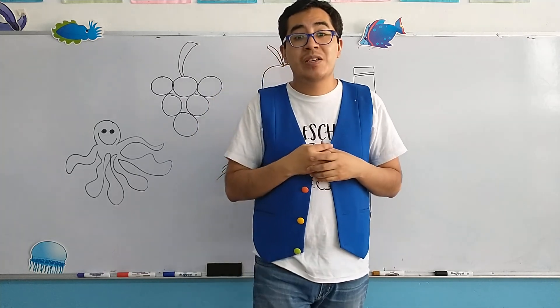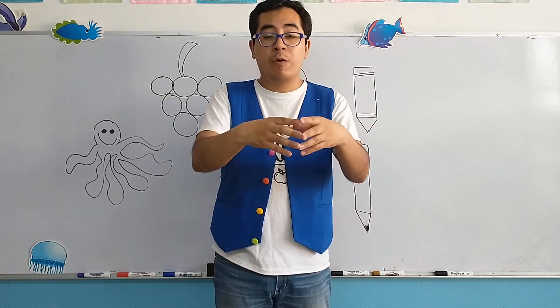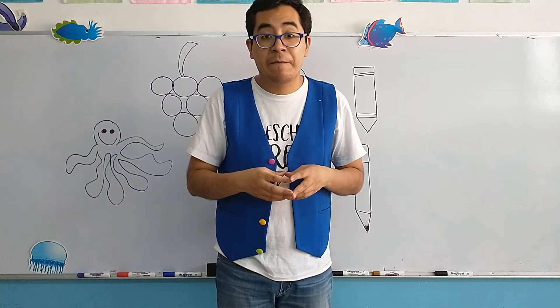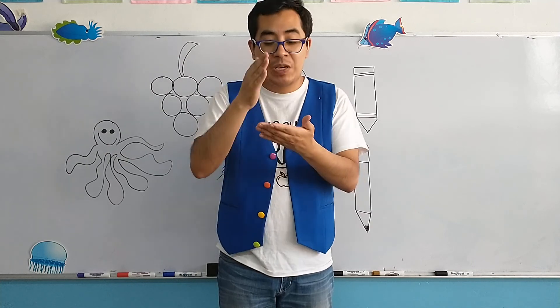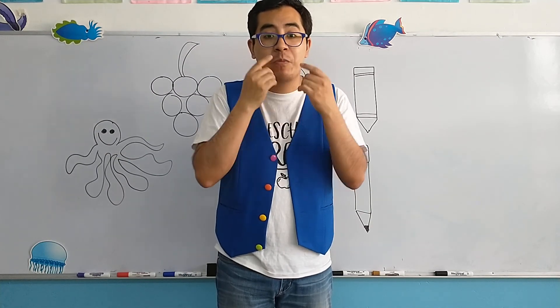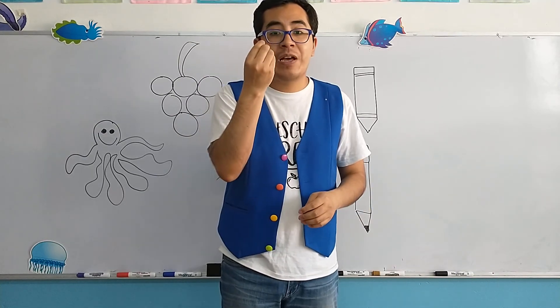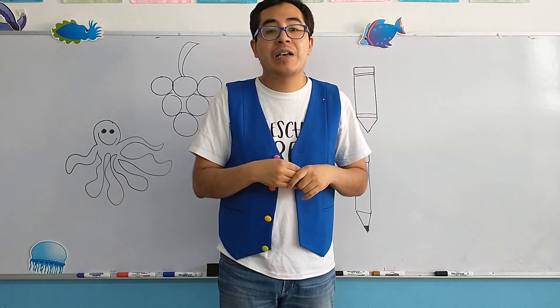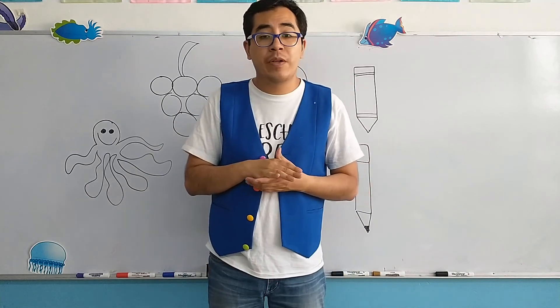Recuerden chicos que la cebolla tiene tres colores. Podemos ver de color blanco, de color morado, o a veces color verde. Y recuerden chicos que nosotros cuando lleguemos a partir cebolla, pues va a provocar lágrimas en los ojos. Es una sustancia que produce la cebolla que nos hace a que lloremos, okay?